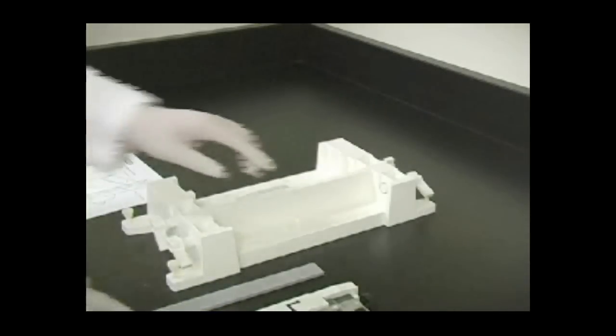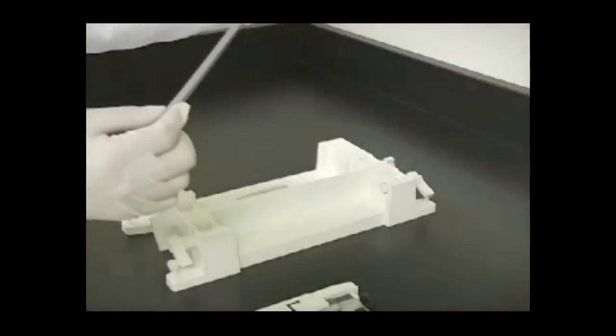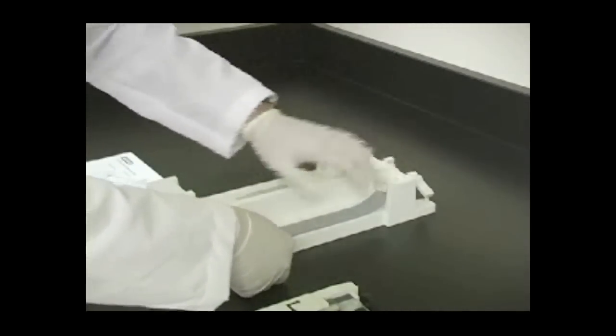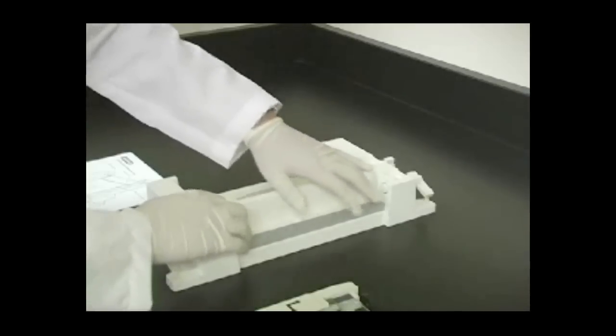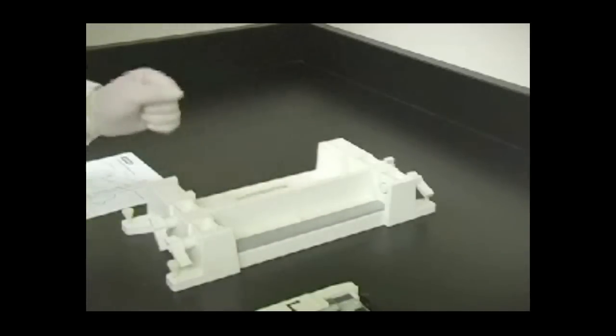Place the casting stand on a flat surface. Place a foam gasket in one of the casting slots. Check to make sure the gaskets are clean and free of residual acrylamide. This will help ensure a good seal.